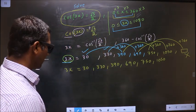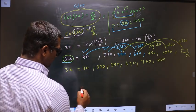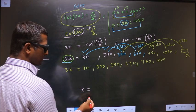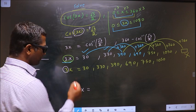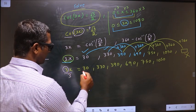Now we should get the values for x. For that I should remove this 3. So to remove the 3 you divide by 3.